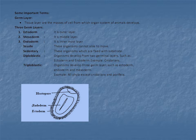Diploblastic: di means two, blast means layer — those animals which have two body germinal layers are known as diploblastic. Triploblastic: tri means three, blast means layer — those animals which develop three germ layers of the body are known as triploblastic, having ectoderm, endoderm, and mesoderm. Except cnidarians and porifera, all phyla are triploblastic.